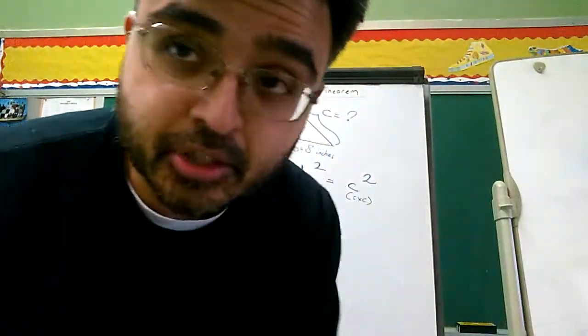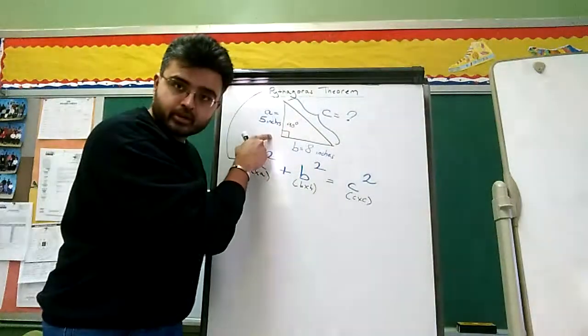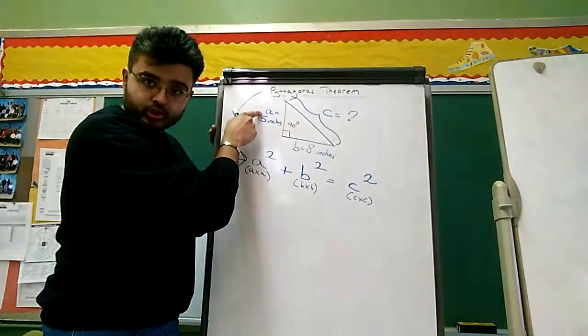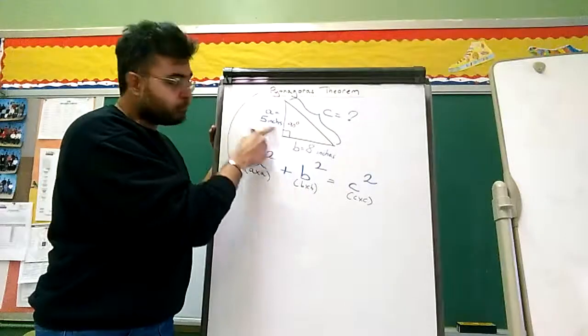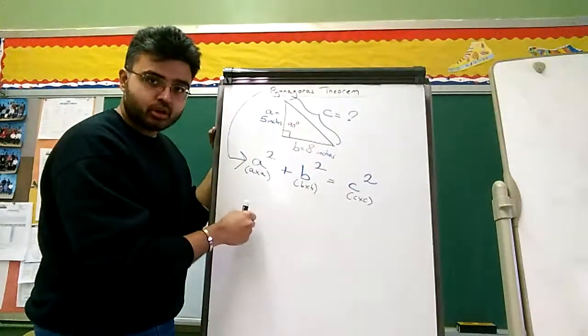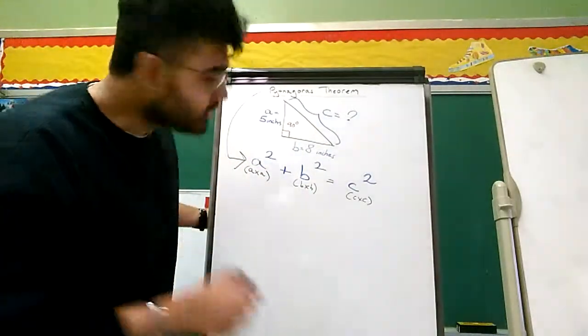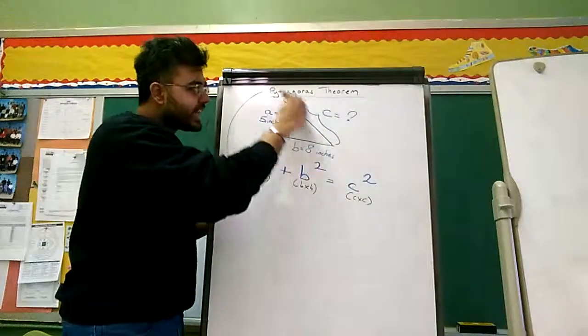Hi, welcome back students. Let's continue part two of Pythagoras Theorem. Now, we have the problem over here, a triangle. Side A, the shortest side, is 5 inches long. Side B, the medium side, is 8 inches long. And you have to find out what the length of side C is.